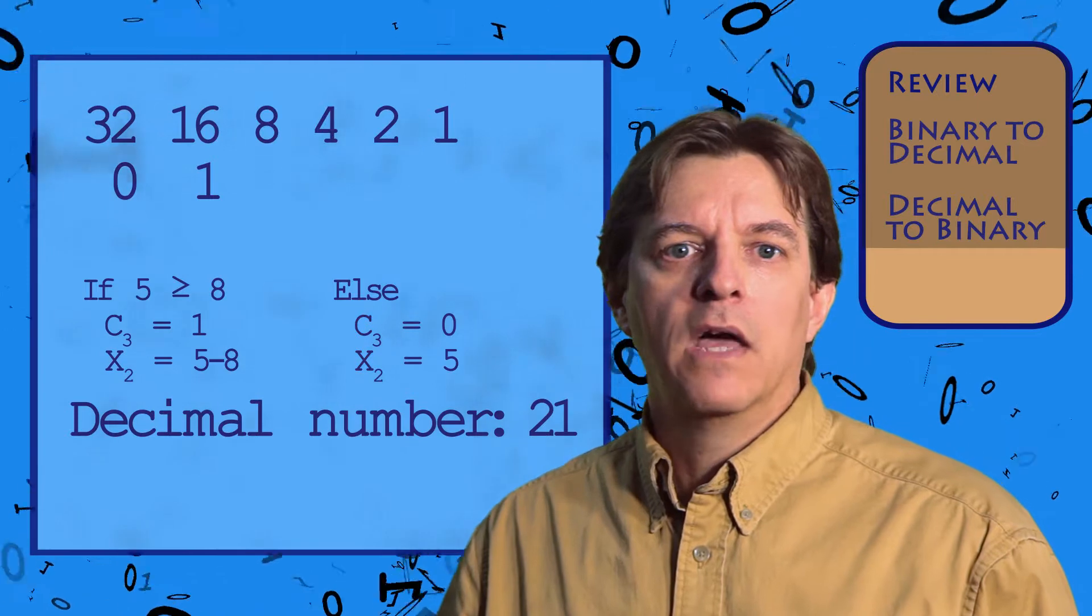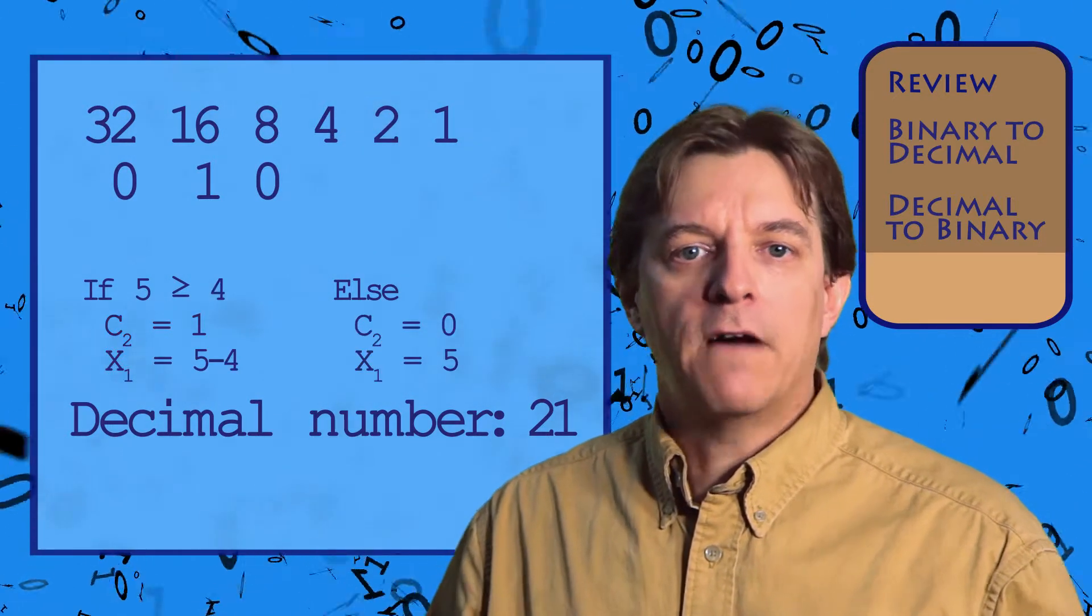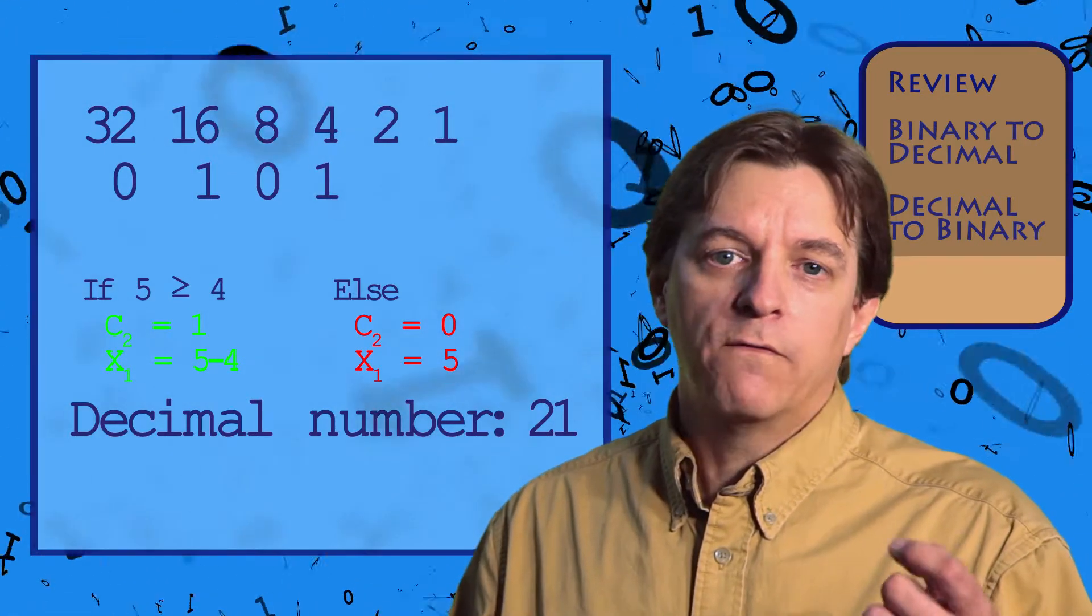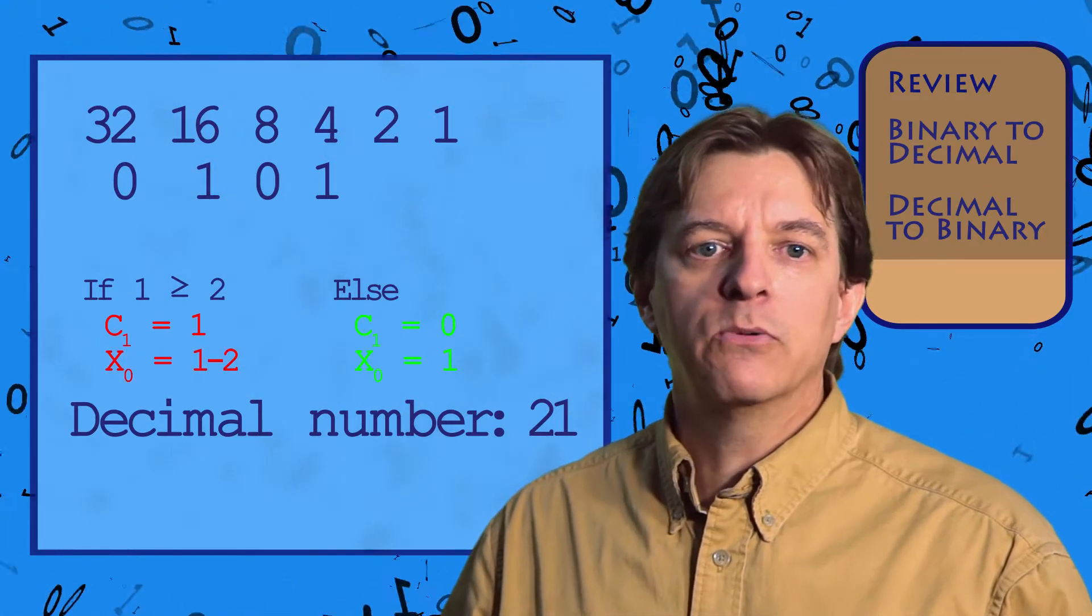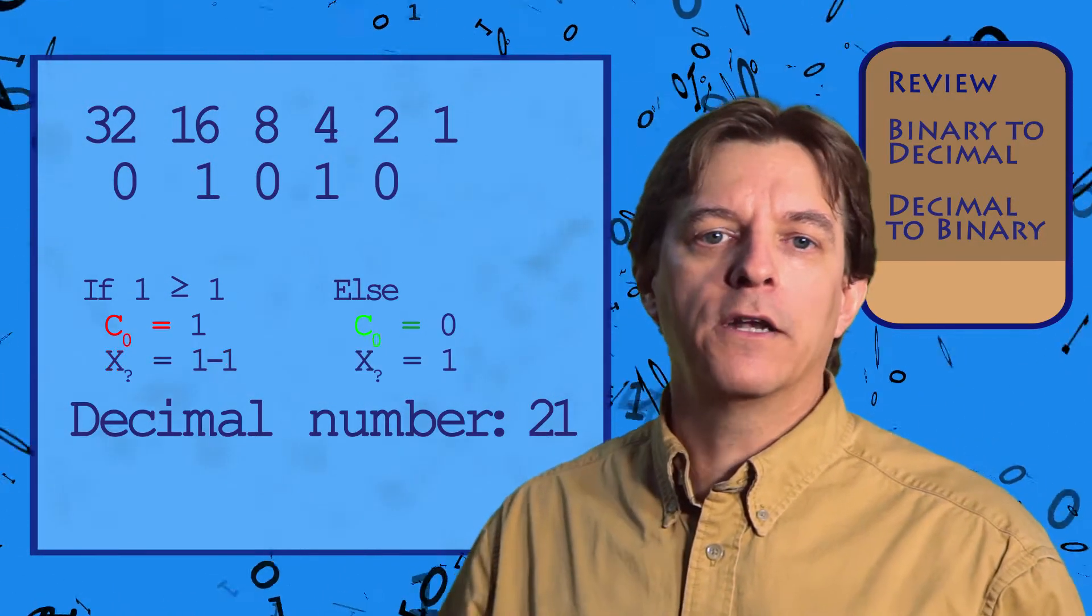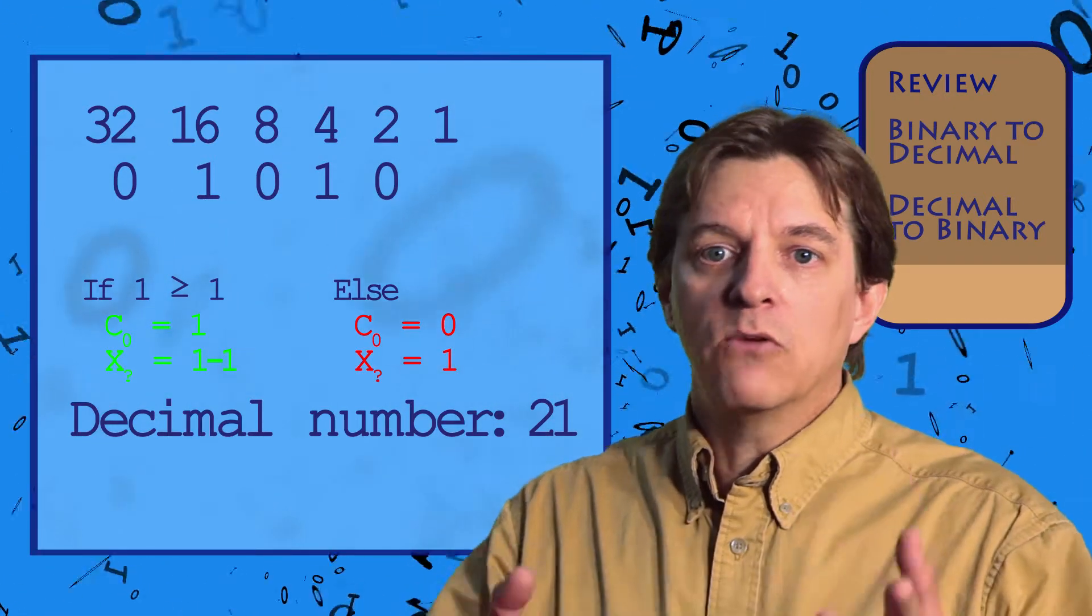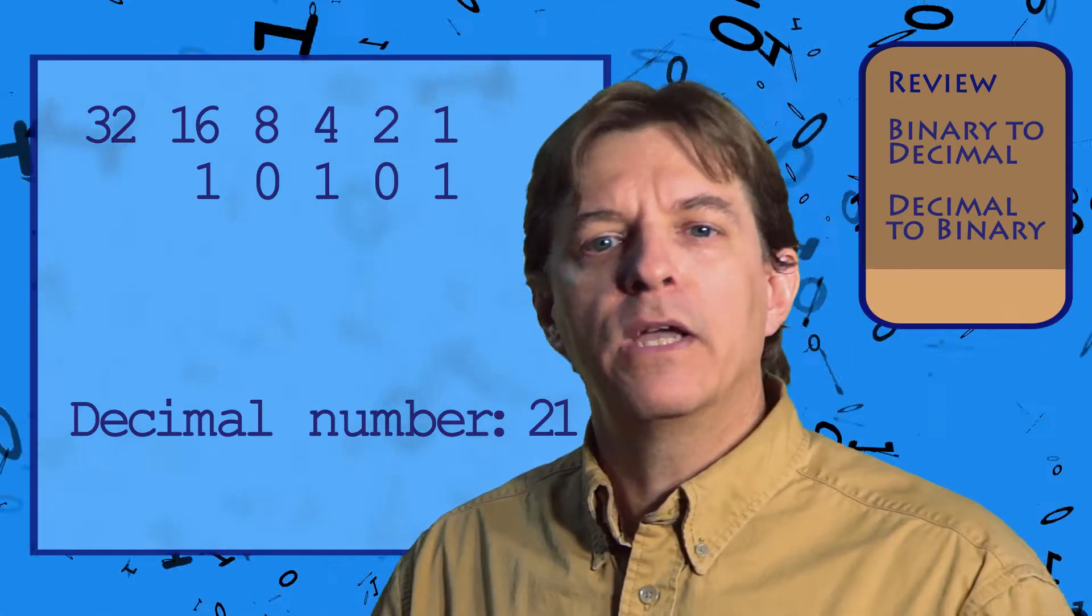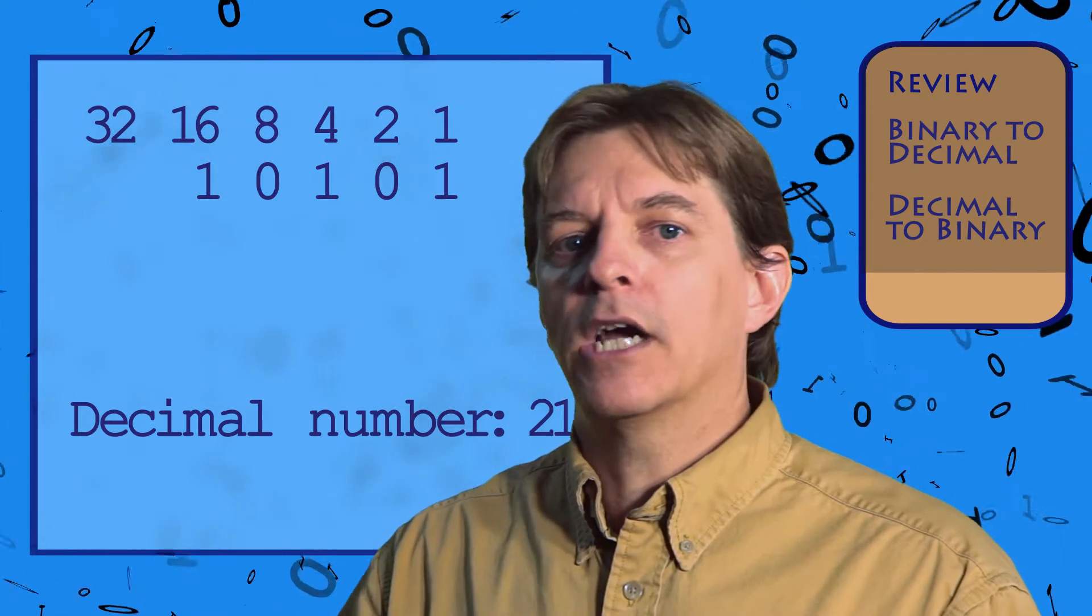Next column. 5 is less than 8, so we write a 0 below 8 and move on. 5 is greater than 4, so we set a 1 below the 4 and subtract 4 from 5, leaving us 1. 1 is less than 2, so we set a 0 below the 2 and move on to the units. 1 is equal to 1, so we set a 1 in the units column, subtract 1 from 1, leaving us 0, and we're done! If we get to the end without reaching a 0, we've done something wrong and need to recheck our work.